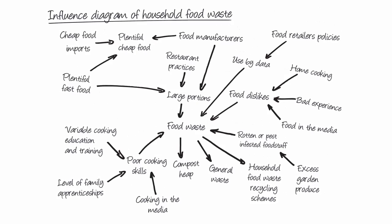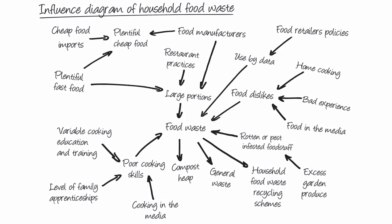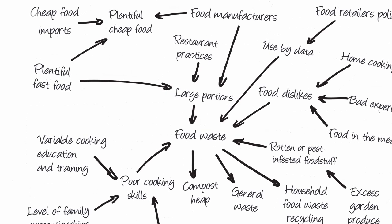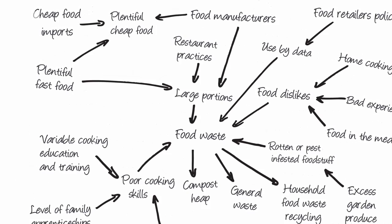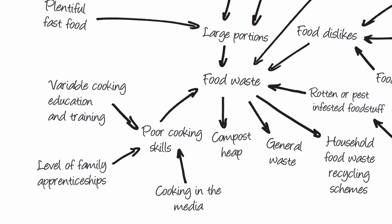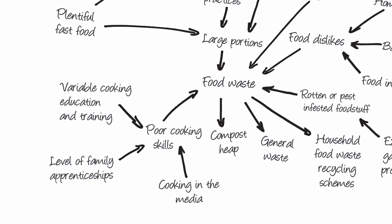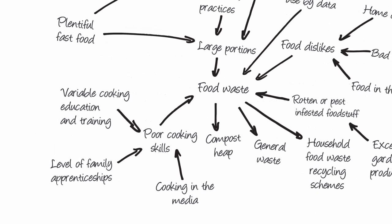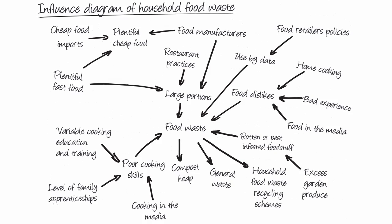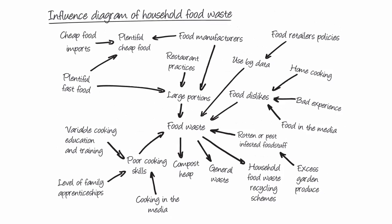Here is another example of an influence diagram. An influence diagram represents the main structural features of a situation and the important influences that exist between them. The arrow shows the capacity to influence, but not a sequence of influences, unlike a multiple cause diagram. The influence diagram shown here is about the influences on food waste. Large portion size is a key influence on food waste, arising from plentiful fast food, cheap food, mass manufacturing and restaurant practices. Poor cooking skills can also influence large portions and directly lead to food waste. Poor skills are influenced by variable education, training, family apprenticeship and cooking in the media — perhaps by overemphasizing gourmet-type food experiences rather than developing basic skills. Other factors influencing food waste include food dislikes and use-by-dates. I like this diagram because it conveys all in one go the diverse influences upon food waste, some of which could require further investigation — for example, what influences restaurant practices which lead to large portion sizes?